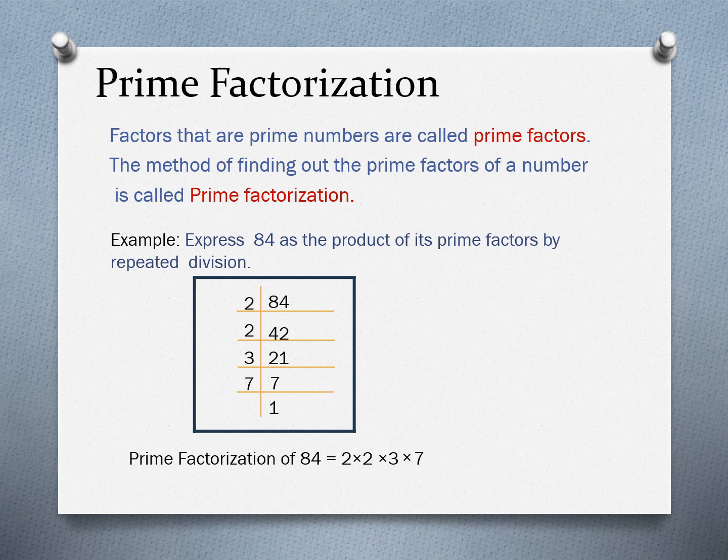Prime factorization — factors that are prime numbers are called prime factors. The method of finding out the prime factors of a number is called prime factorization. For example, express 84 as the product of its prime factors by repeated division. We always begin with the smallest prime number that divides the given number — 2 is the smallest prime number.